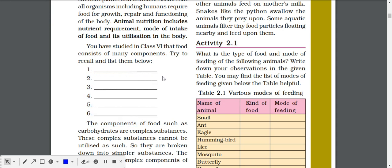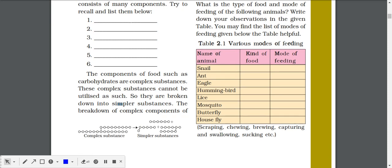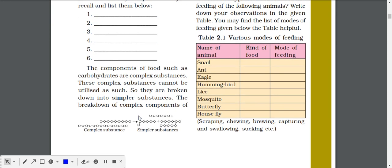You have already studied examples in plants: carbohydrates, fats, vitamins, minerals, proteins. The components of food such as carbohydrates are complex substances. These complex substances cannot be utilized as such, so they have to be broken down. Our body cannot digest anything in its normal form.